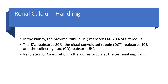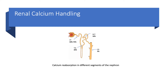Regulation of calcium excretion in the kidney occurs at the terminal nephron. So most of the reabsorption happens in the proximal tubule, but the fine-tuning of the process happens in the last part — in the terminal nephron. This schematic shows the proximal tubule at 60 to 70 percent, thick ascending limb at 20 percent, distal convoluted tubule at 10 percent, and collecting duct at 5 percent.